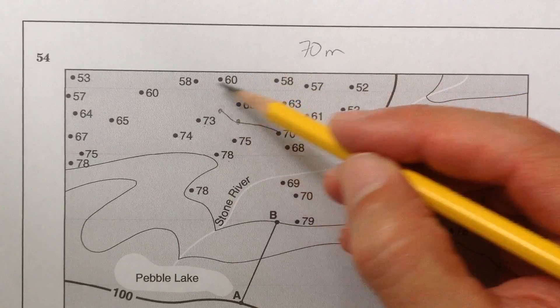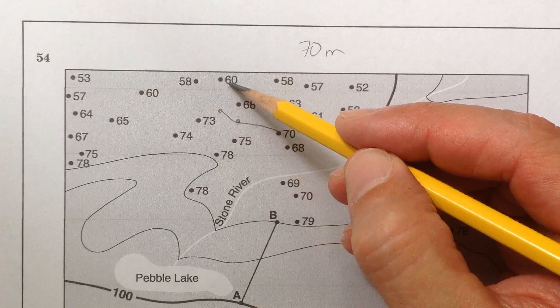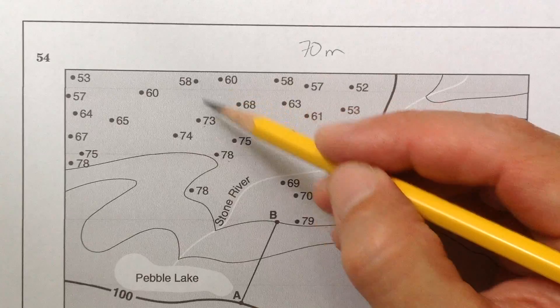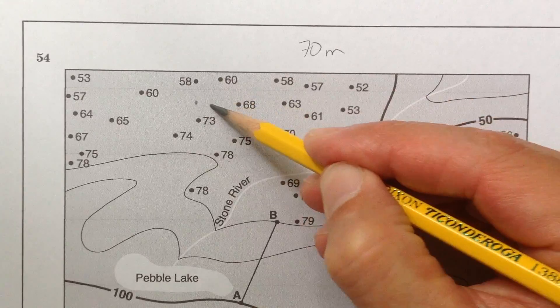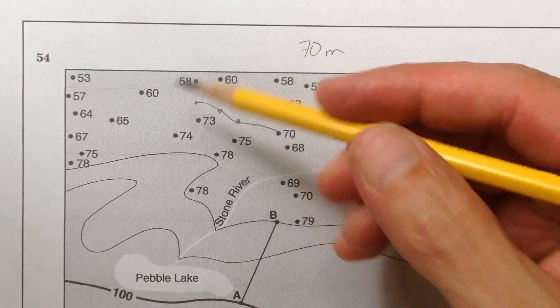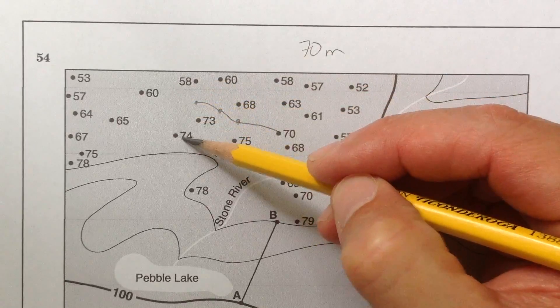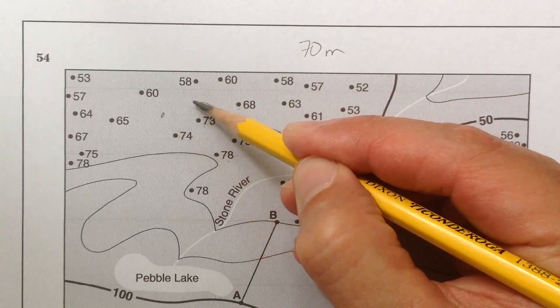Is 70 between 58 and 60? No. Is it between 58 and 73? Yes, it is. So then I go like this. 70 again. Is 70 between 60 and 74? Yes, it is. I'm now going here.